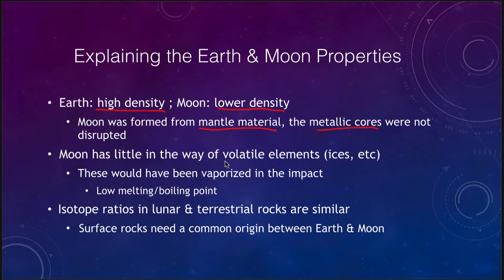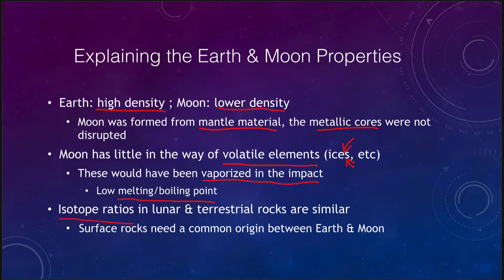It also explains why the moon has very little in terms of volatile elements — things like ices, objects with low melting or boiling points. These would have been vaporized in the impact, so the material that formed the moon and ended up in orbit around the Earth would not have contained lots of ices. It also explains why isotope ratios in lunar and terrestrial rocks are similar — the surface rocks would need a common origin. The material from the Earth and the impactor would have formed similar crustal materials on both bodies, explaining why those ratios are roughly the same.